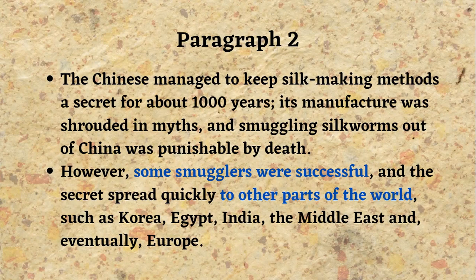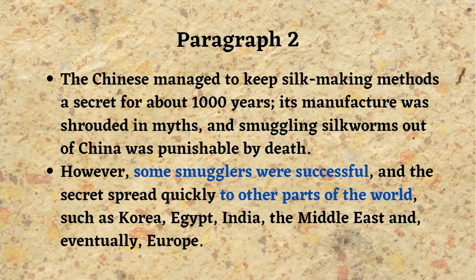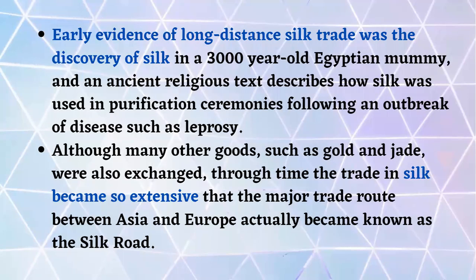Moving to paragraph two: the Chinese managed to keep silk-making methods a secret for about one thousand years. Its manufacture was shrouded in myths, and smuggling silkworms out of China was punishable by death. However, some smugglers were successful and the secret spread quickly to other parts of the world, such as Korea, Egypt, India, the Middle East, and eventually Europe.